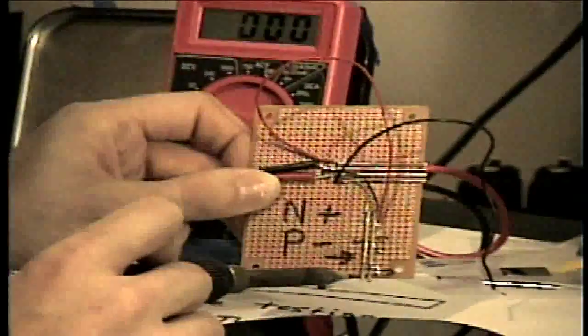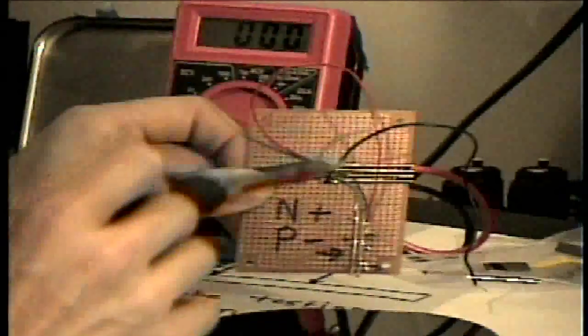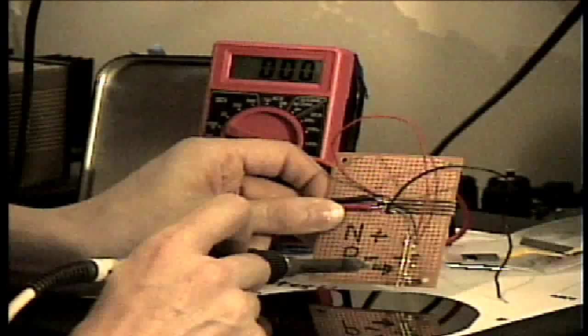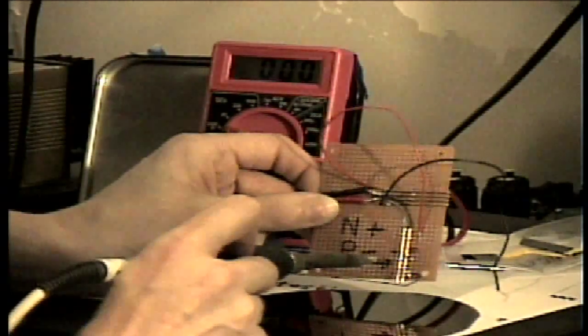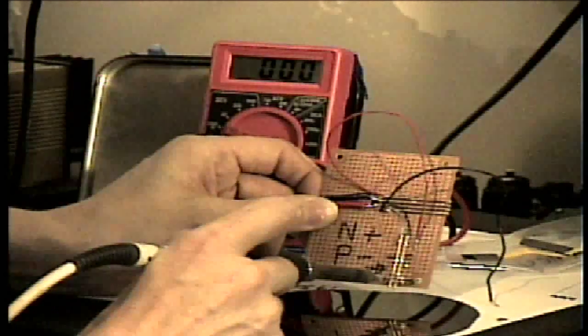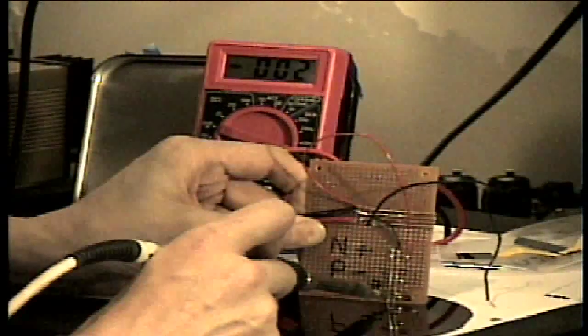What I have here is two spring-loaded pins and a soldering iron. I'm going to heat one of the pins and push it against the wafer, and we should see that this is a P-type wafer, so the meter should indicate negative voltage when I push it against the...